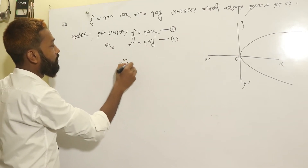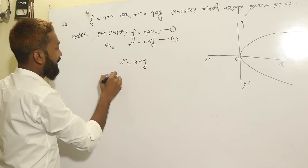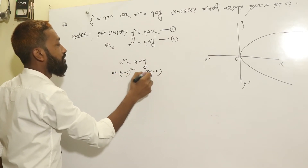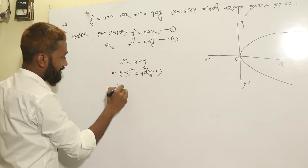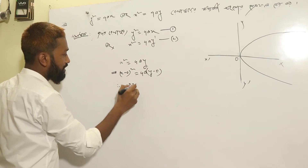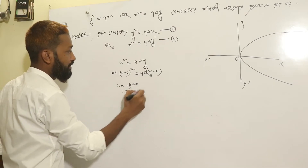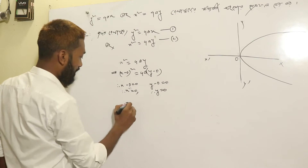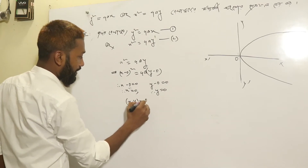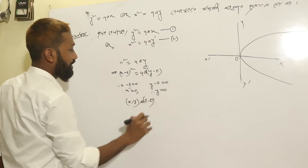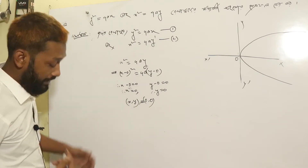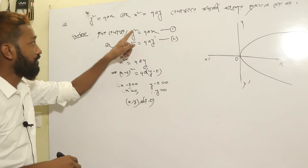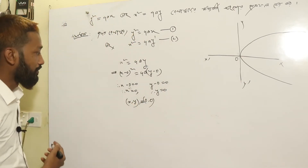x squared is 4ay. The second number is x minus 0 squared. 4ay minus 0. So x squared is 0,0 and y squared is 0,0.